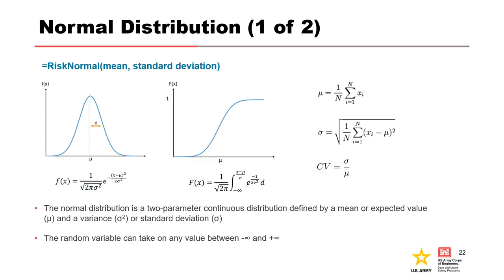The normal distribution is a two-parameter continuous distribution defined by a mean and a variance, or standard deviation. The variance measures how far a set of numbers is spread out from their average value, and the standard deviation is the square root of the variance. The PDF and CDF with their equations are shown. In a normal distribution, the mean equals the median and the mode since the distribution is always symmetrical. Many things in nature and engineering are normally distributed, especially in geotechnical engineering — such as the coefficient of permeability, cohesion, phi angle, and SPTs. Because the random variable can take on any value between negative infinity and infinity, this distribution is unbounded.